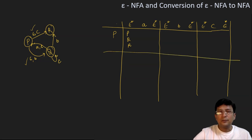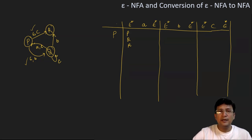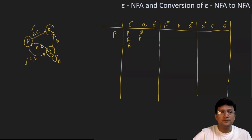Now p on getting a — let's see if it is defined — no, it is not defined, so let's write phi here. Now q on getting a moves to state p. Now r on getting symbol a, which is undefined.